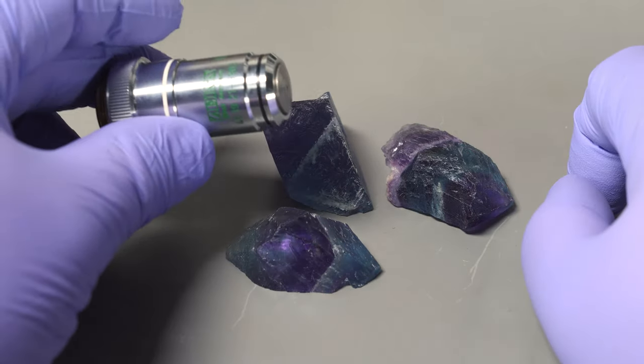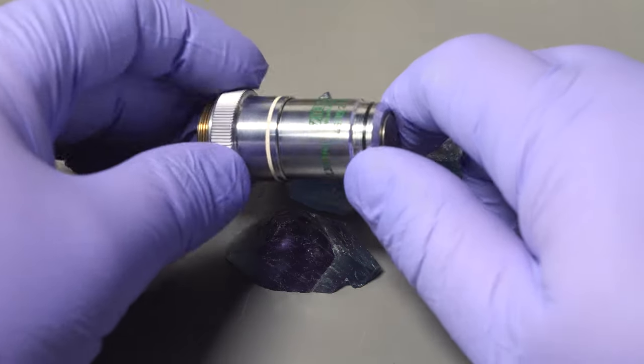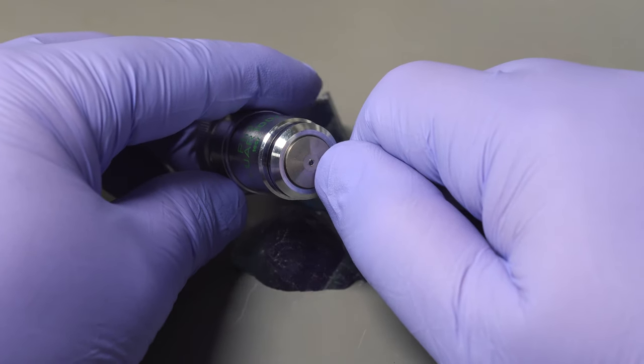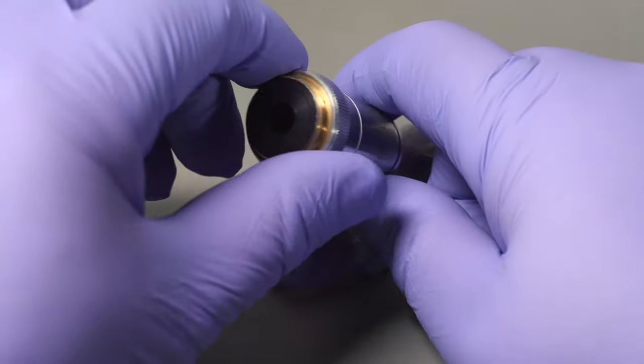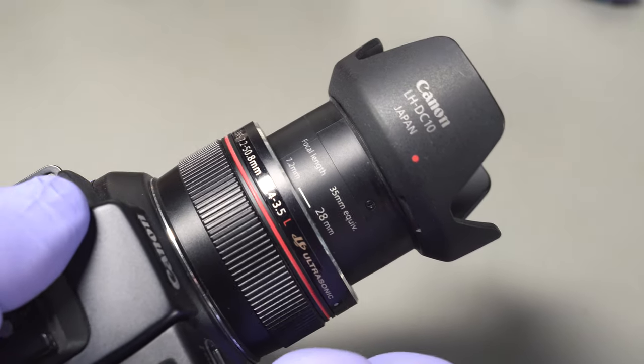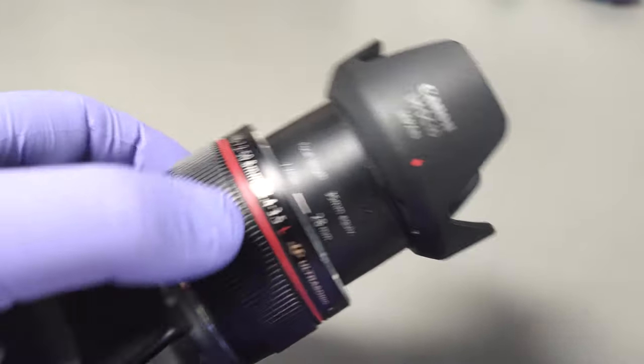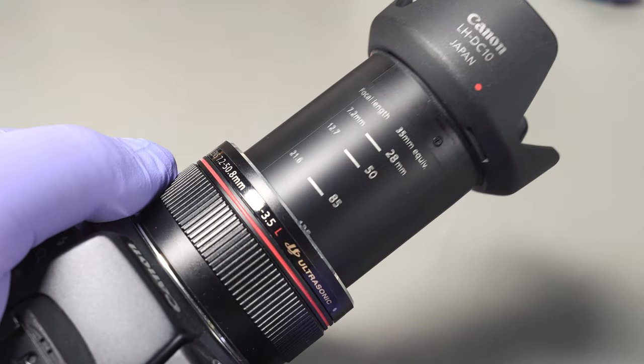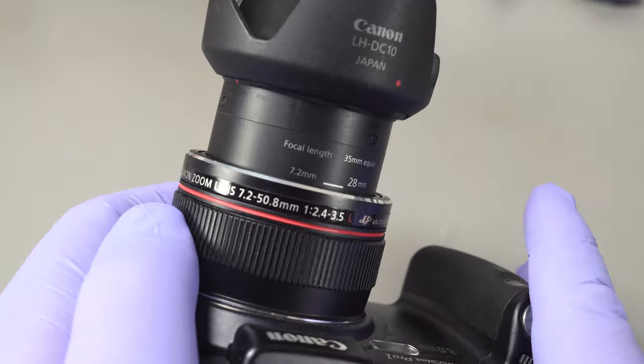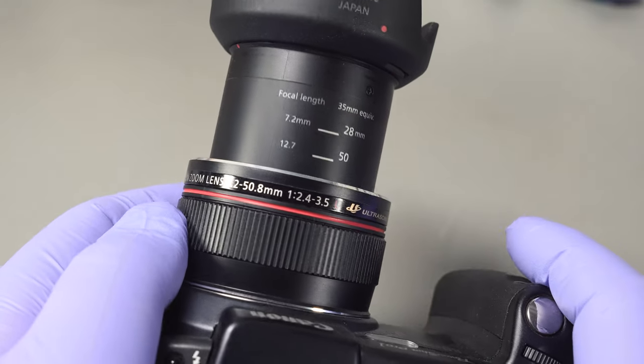They do appear in microscope objectives. The Zeiss one, for example, has it, but look how big that piece of glass is. We'll never see it. Another option is the Canon PowerShot Pro 1, which uses a fluorite element in it. But that whole lens system is quite small. So I think the fluorite in that would be pretty small. And besides, I love my Canon Pro 1.